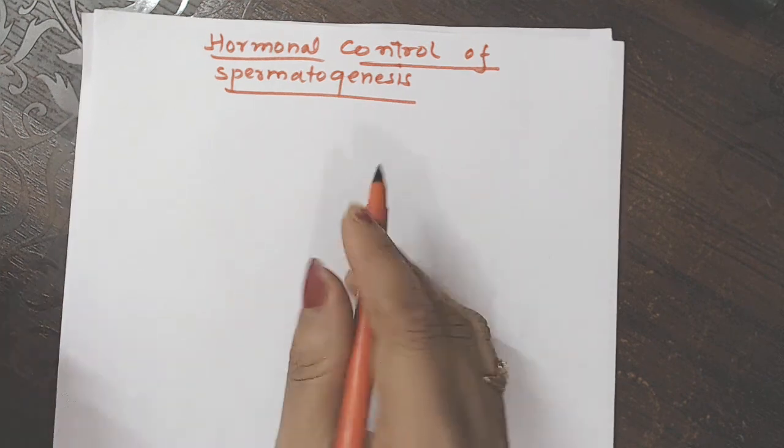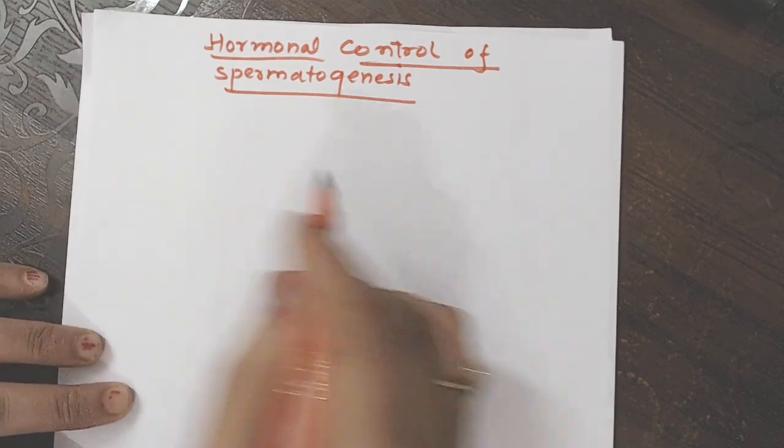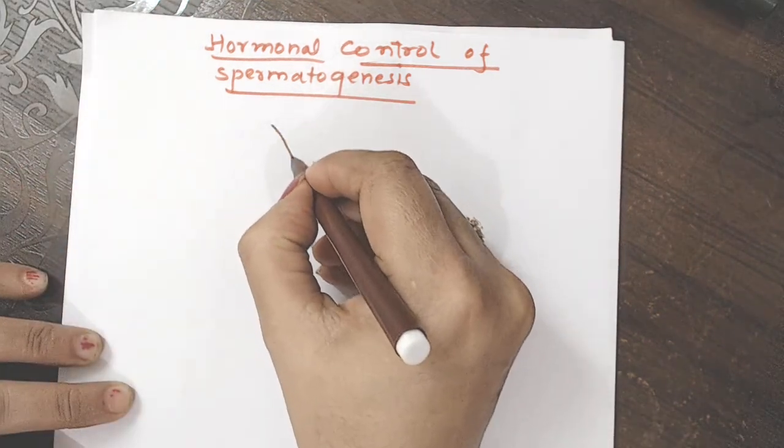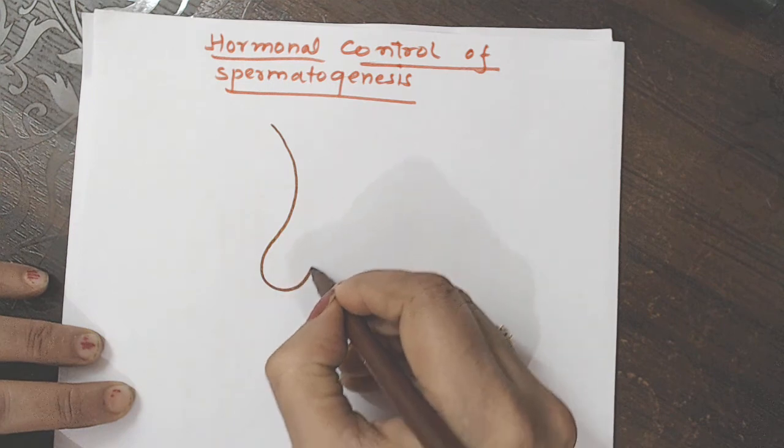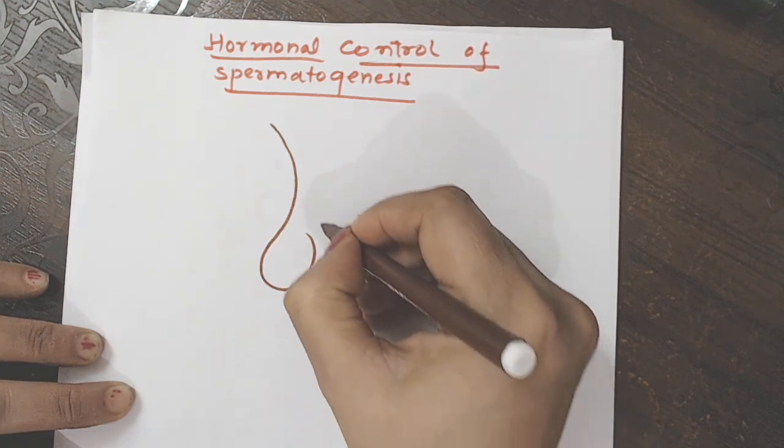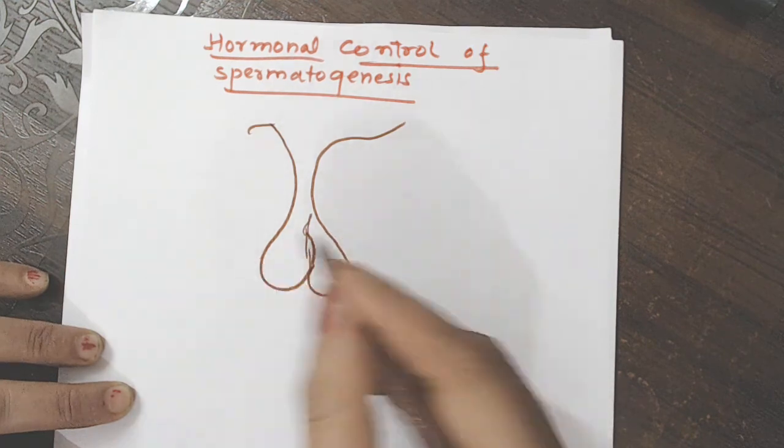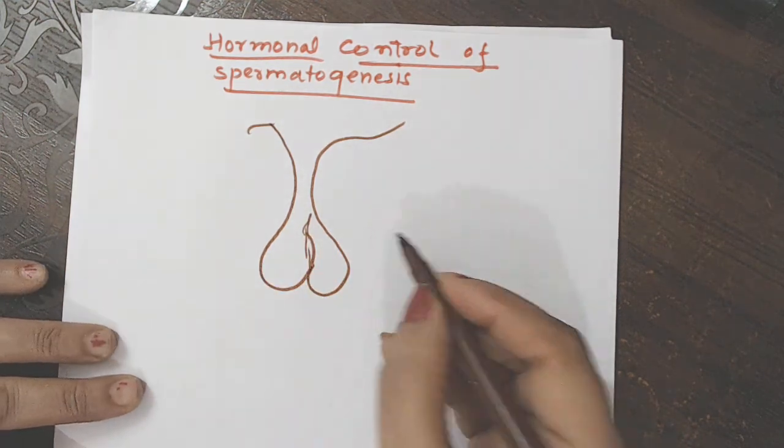and it secrete a hormone known as GNRH, gonadotropin-releasing hormone. So if we present this diagrammatically, then what do we do? Pituitary. It is the tri-lobe structure,